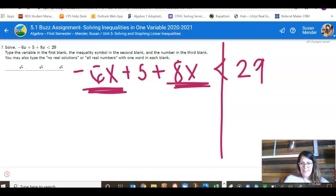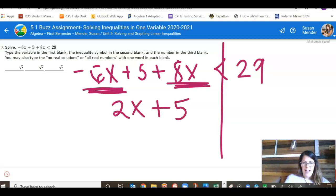See these guys that are x's? They're like terms. So it's negative 6 plus 8, which is going to give me a positive 2x plus 5 is less than 29.